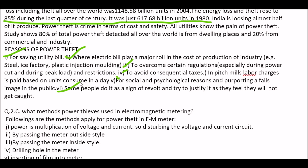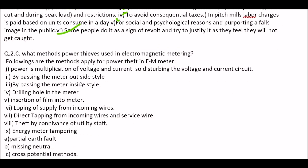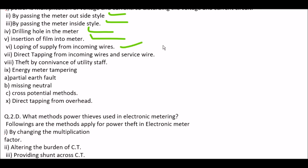Next question: what methods do power thieves use in electromagnetic metering? Answer: the following methods are applied for power theft in EM meters. Power is the product of voltage and current, so disturbing the voltage and current circuit; bypassing the meter outside style; bypassing the meter inside style; drilling a hole in the meter; insertion of a film into the meter; looping of supply from incoming wires; direct tapping from incoming wires and service wires; tapping by connivance of utility staff; energy meter tampering; partial earth fault; missing neutral; cross potential methods; and direct tapping from overhead lines.